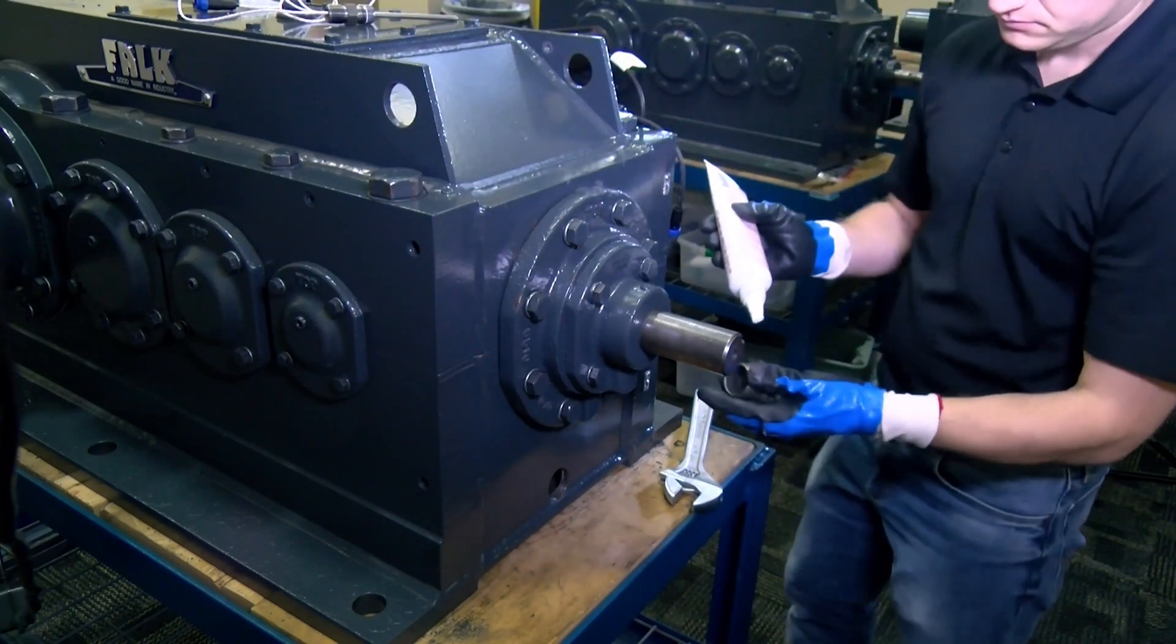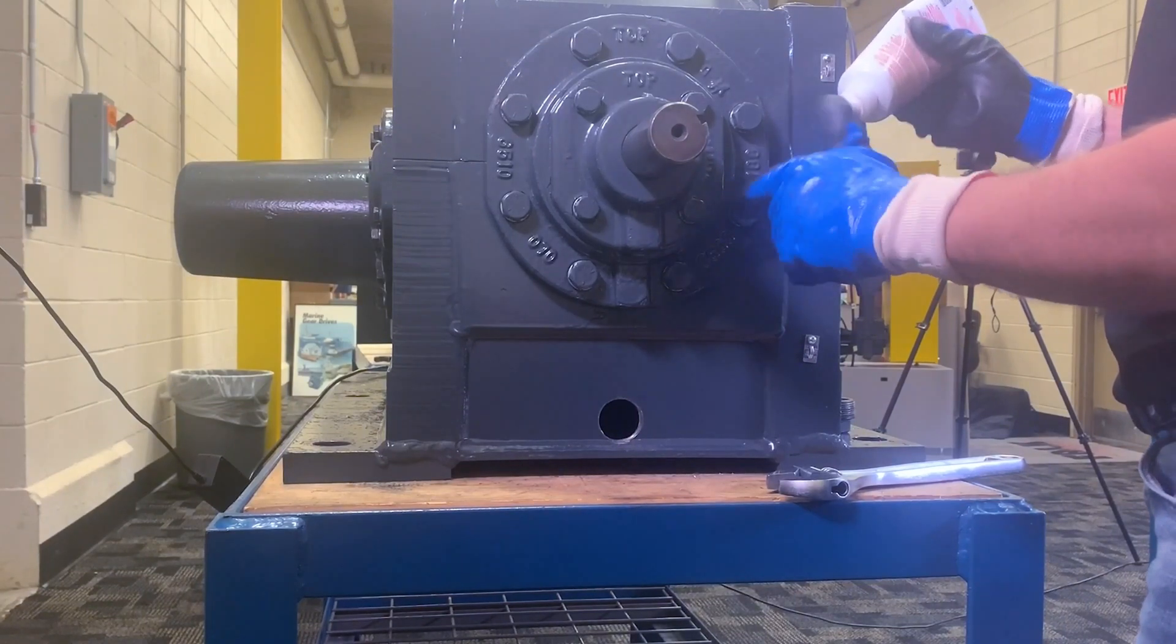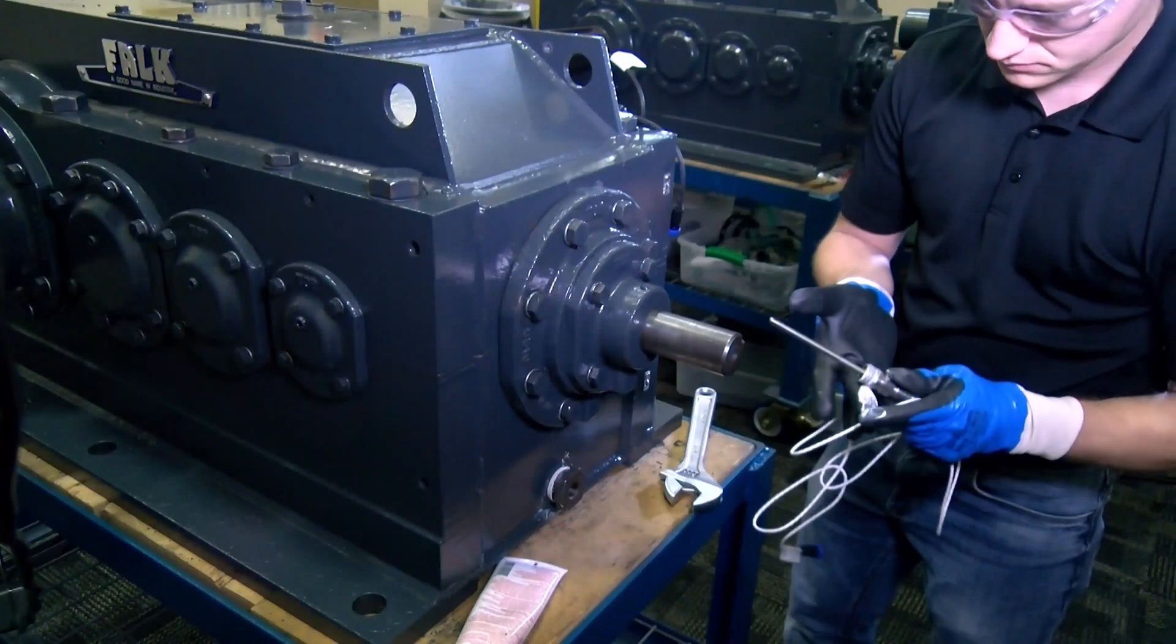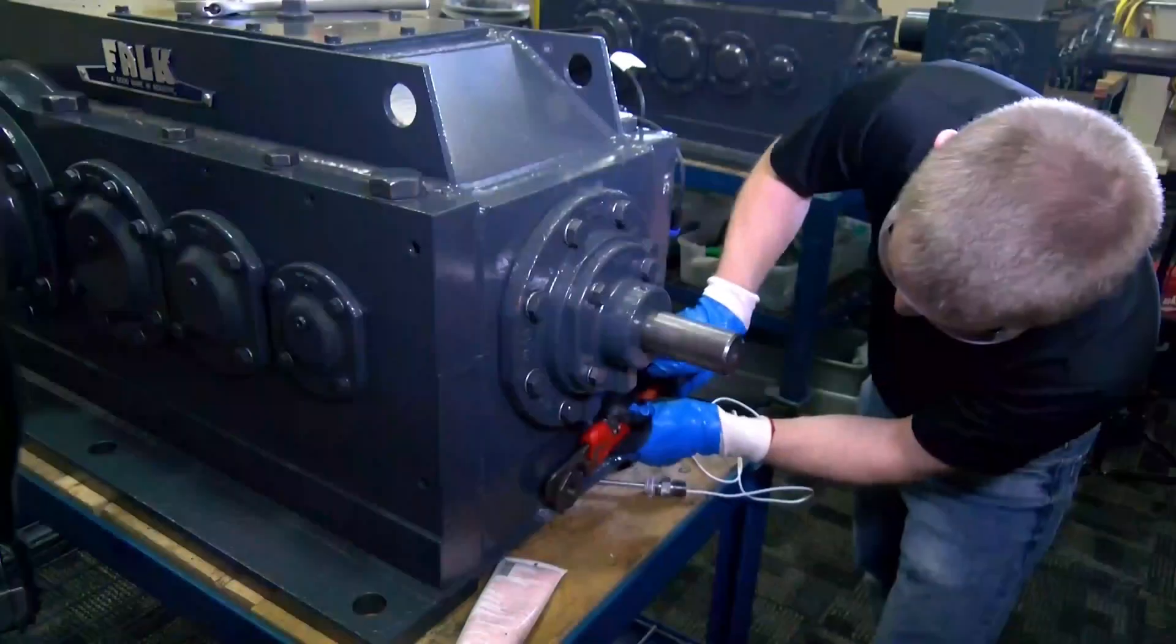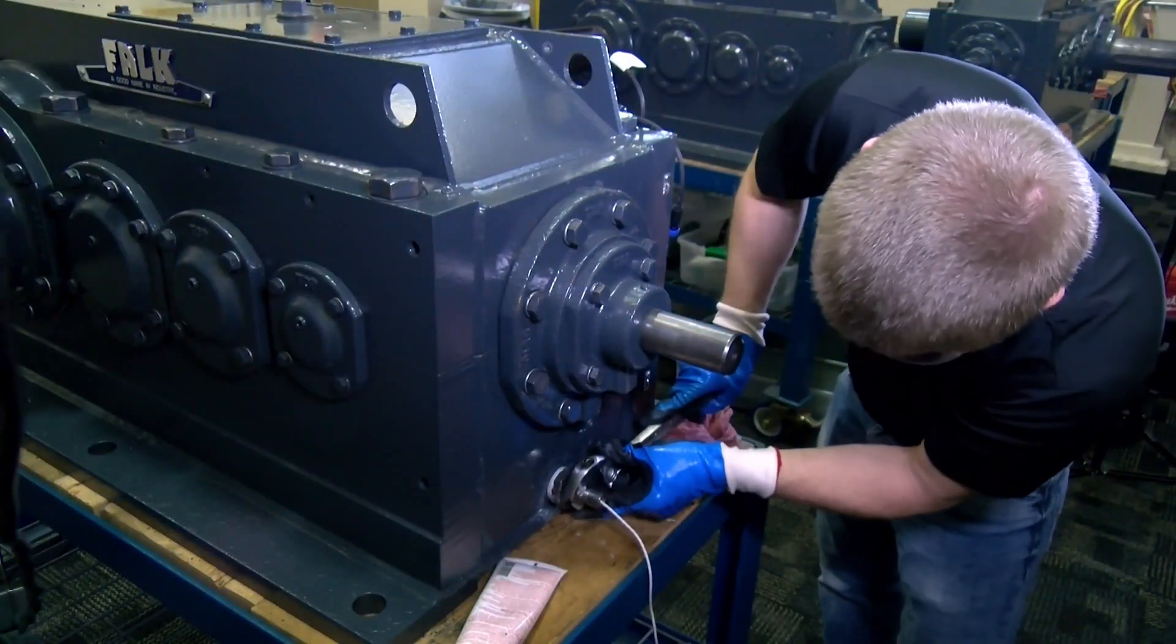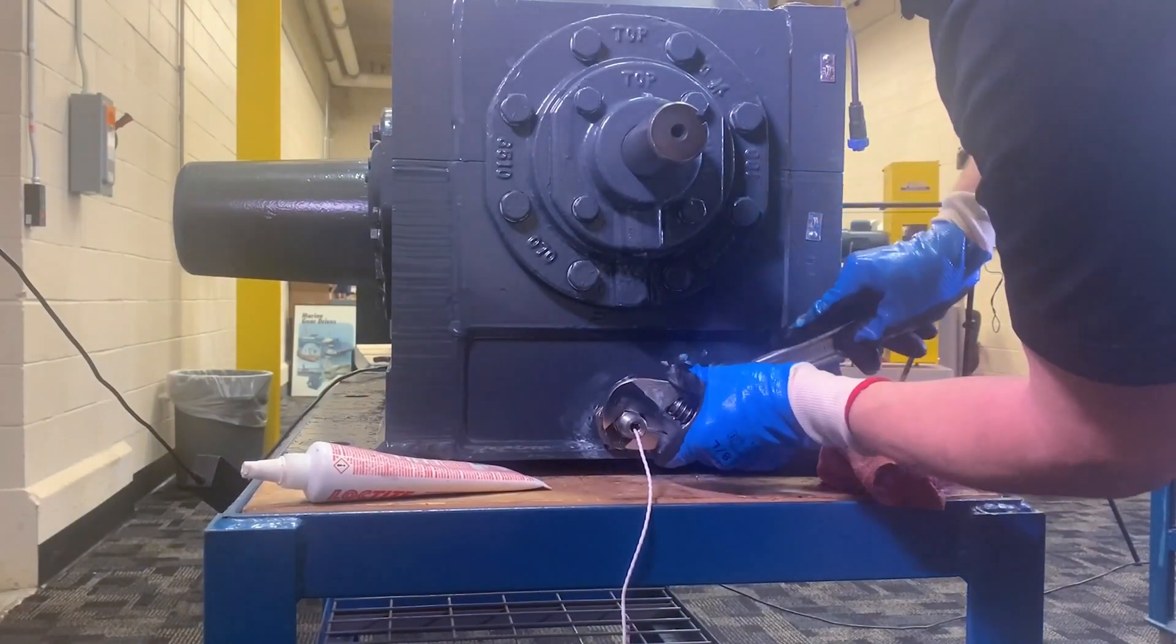Three bushings are included in the 1010 universal kit. Select the proper size based on the gear drive you are installing the kit on. Apply pipe joint compound to the threads on the bushing and temperature sensor. Install the bushing into the drain port and then install the temperature sensor into the bushing.